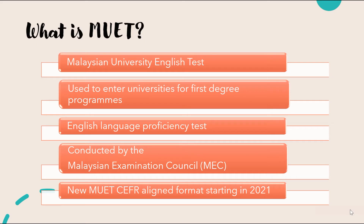So what is MUET? MUET stands for the Malaysian University English Test. This test, as the name suggests, is an English language test that is meant for use at university level. MUET is a must for those who plan to enter university for first degree programs. This is a language proficiency test.